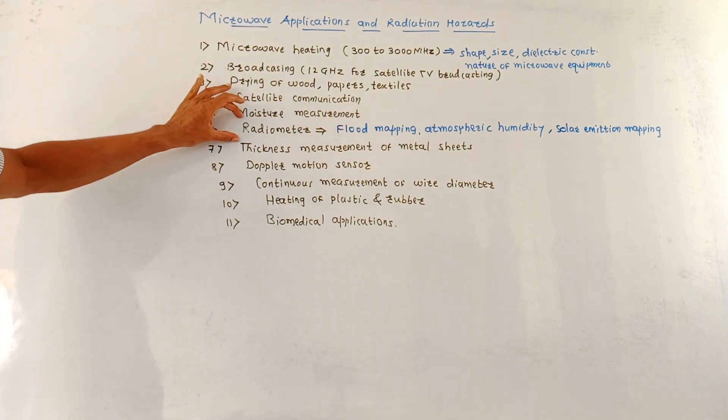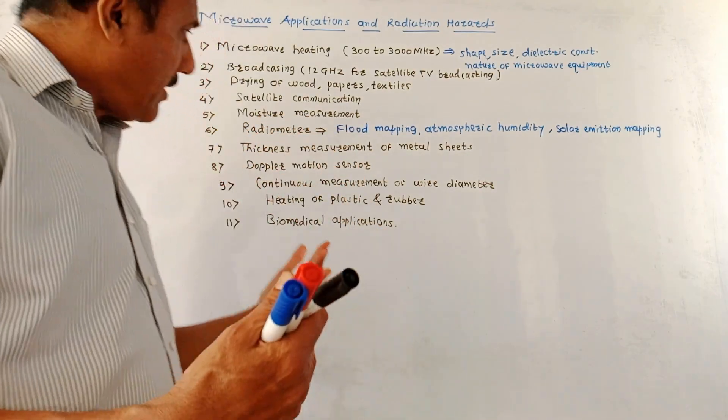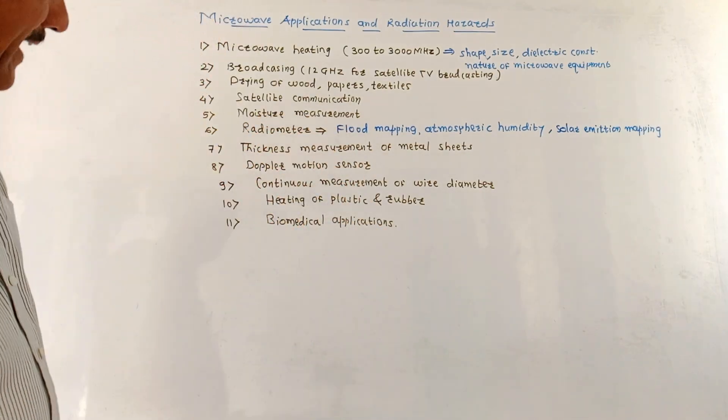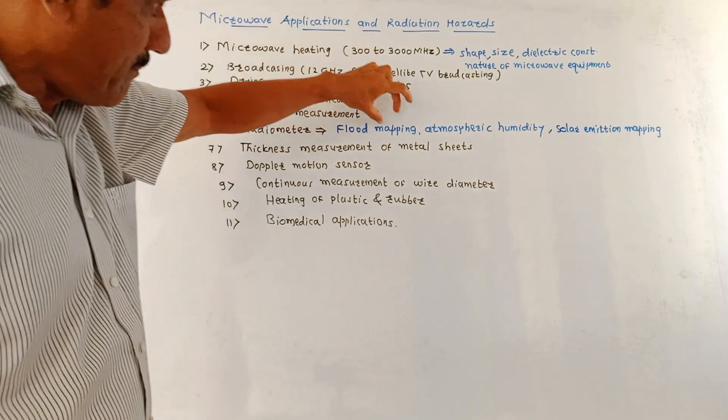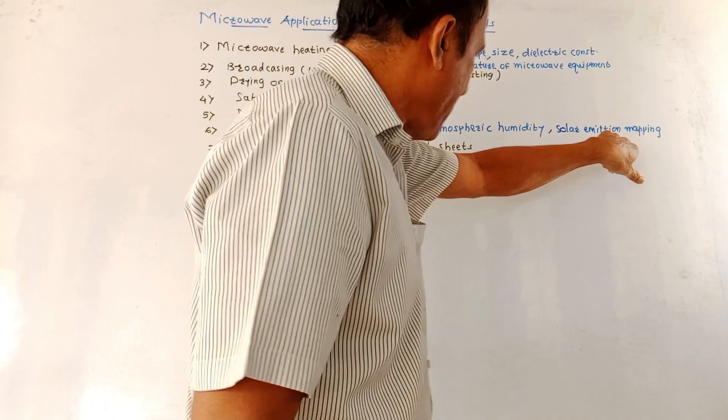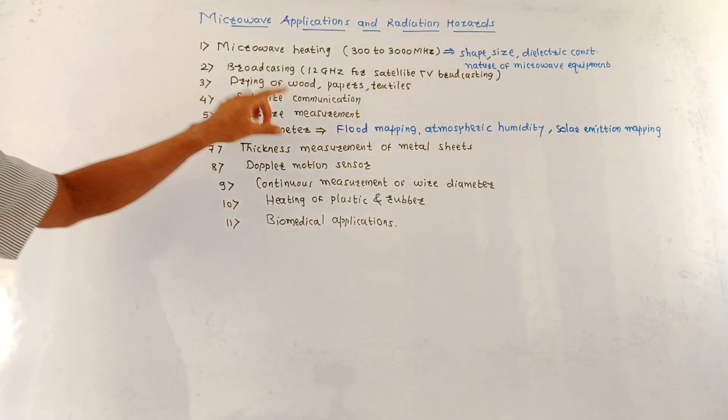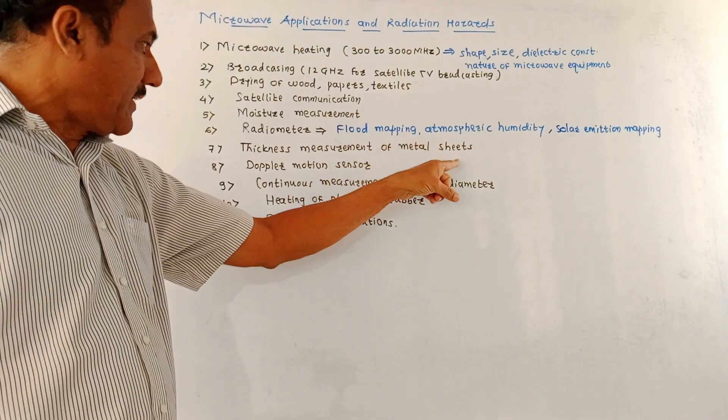Another important application is Radiometer. This concept is related to the measurement of black body because it is used for flood mapping, atmospheric humidity, solar emission mapping, and so on.